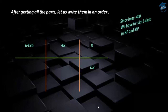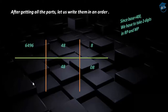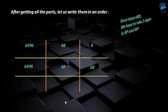Moving to the middle part, we have a 2-digit number so there is no problem — we write 48 directly in the middle part. Moving to the left part, we can have as many digits as we want, so I am writing 6496 directly. Now placing one more horizontal bar and combining all the parts, we get the final result. Therefore, 402³ is equal to 64,964,808.